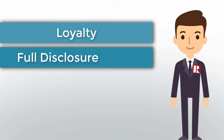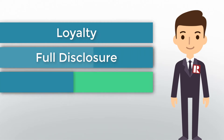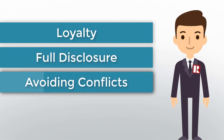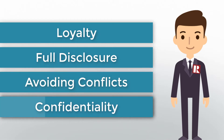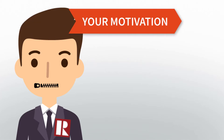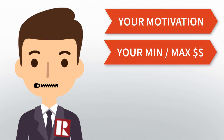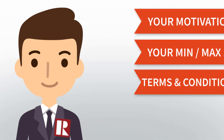Full disclosure: your agent must tell you everything they know that might influence your decision in a transaction. Avoiding conflicts of interest: your agent must avoid any situations that would affect their duty to act in your best interests. Confidentiality: your agent must not reveal your private information without your permission, even after your relationship ends. That includes your reasons for buying or selling, your minimum or maximum price, and any preferred terms and conditions you may want to include in a contract.